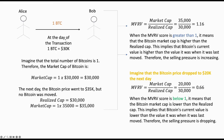Let us see an example. Today, Alice paid one Bitcoin to Bob. The price of Bitcoin at the time of the transfer was $30,000. For simplicity, imagine the total supply of Bitcoin is one. To calculate the market cap of Bitcoin, we multiply the circulating supply — which in this example is only one — by its price of $30,000, giving us a market cap of $30,000.